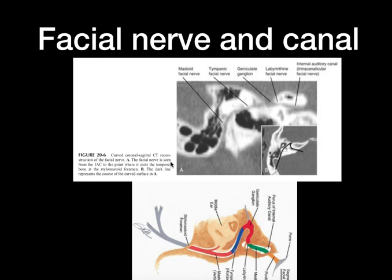Coming to the facial nerve and canal — there are various segments, and unless you scroll through the images you cannot see the entire facial nerve. A good oblique curved coronal reconstructed image can depict the entire facial nerve course in the temporal bone. You can see the mastoid portion, the tympanic segment, the geniculate ganglion, the labyrinthine segment, and the internal auditory canal. It arises from the brainstem, passes into the internal auditory canal, then the labyrinthine segment, turns at the geniculate ganglion, runs through the tympanic cavity, then the mastoid segment, and exits through the stylomastoid foramen. Look for the entire facial nerve canal, any erosions in cases of cholesteatoma or CSOM, and the rare entity of congenital absence of the facial nerve canal.